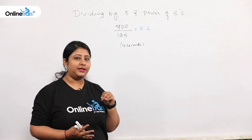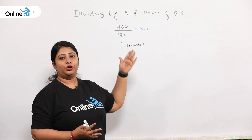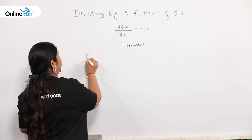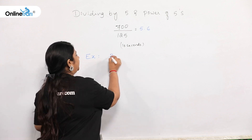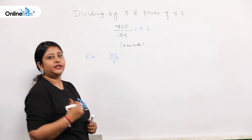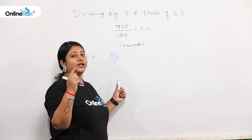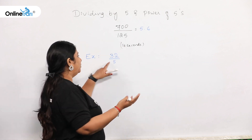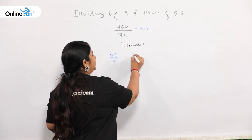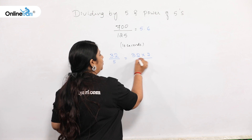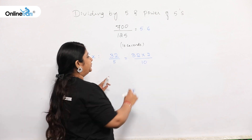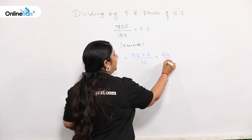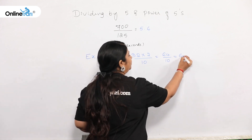Initially I am taking some simple examples, and later on we will find out how this technique is applicable for bigger numbers. Let me explain with a simple question: 32 divided by 5. I am writing this as 32 × 2 divided by 10, which is nothing but 32/5. So 32 × 2 = 64, and 64 divided by 10 is 6.4.